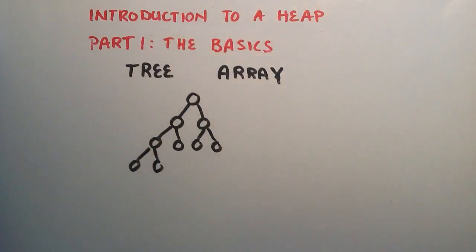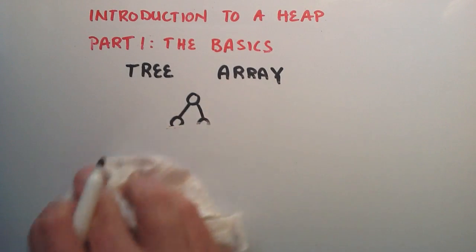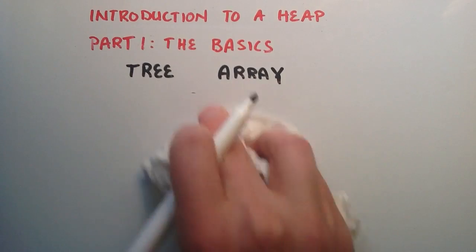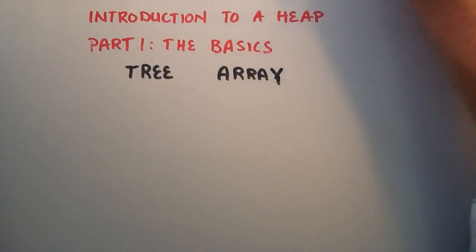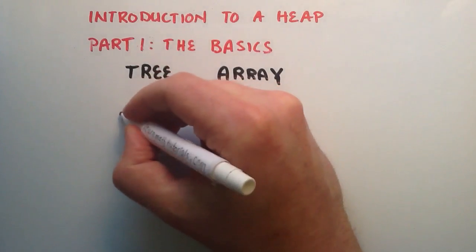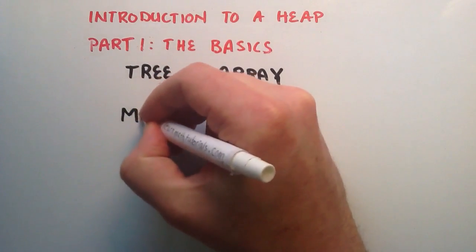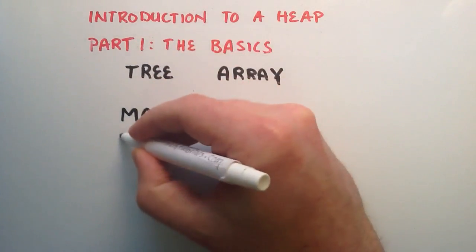So now that we've covered the basic structure of a heap, let's talk about the two basic types of heaps that are normally used. So normally when we're dealing with a heap, we're usually dealing with either a max heap or a min heap.